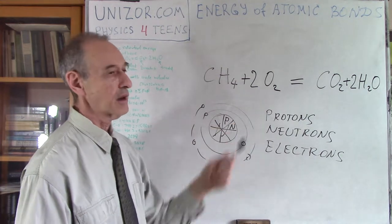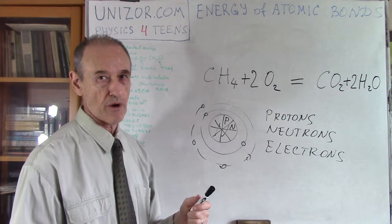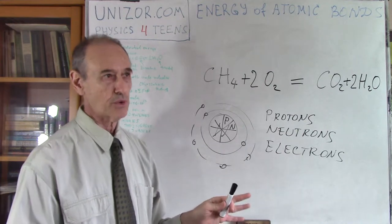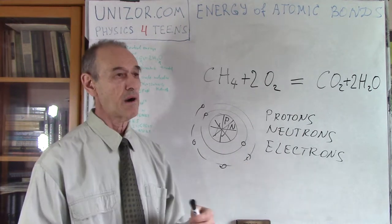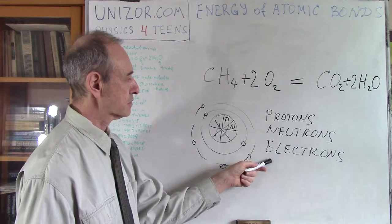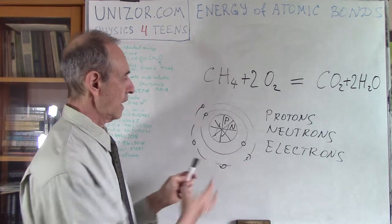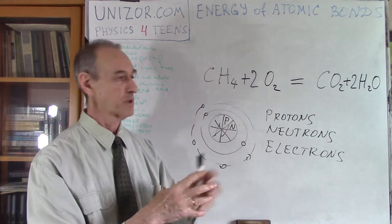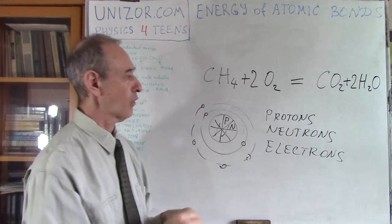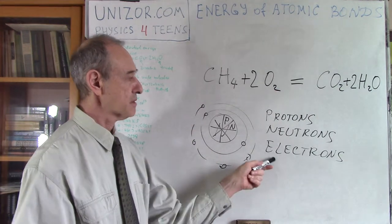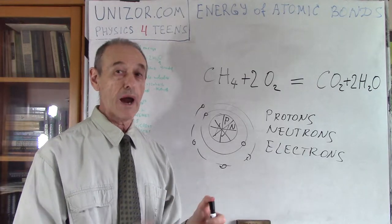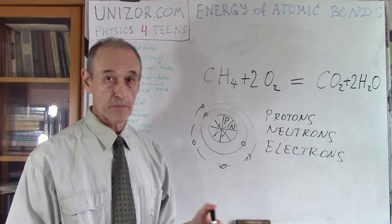Protons are electrically positively charged. Neutrons are neutral — that's why they're called neutrons. Electrons are electrically negatively charged. Electrons are circulating, and this electrical attraction between positive and negative holds them on the orbit. Electrons are very, very light — so light that for our purposes, we will ignore their mass.